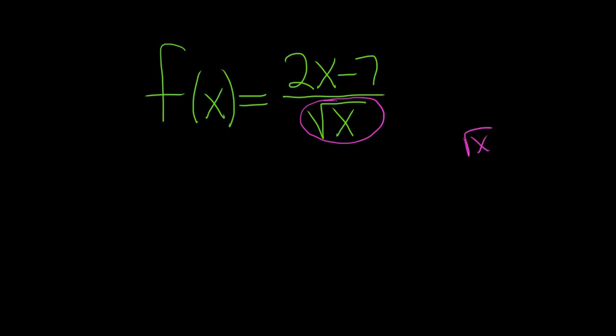So if it was something like this, two terms, it's not a monomial, this is a binomial, then you should use the quotient rule. But when it's a monomial, you can do it this way.